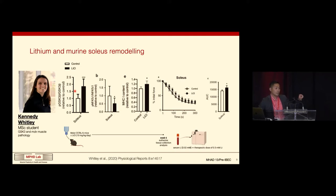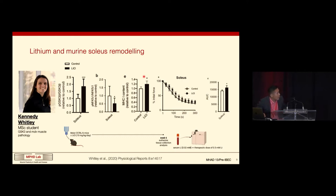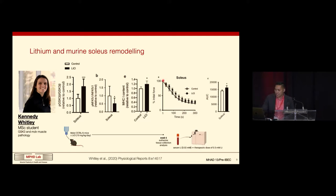GSK-3 phosphorylates NFAT, so when we inhibit GSK-3, we see a drop in NFAT phosphorylation, which activates NFAT. It then goes to the nucleus to increase transcription of genes associated with the oxidative phenotype, such as myosin heavy chain 1, and we see an increase in myosin heavy chain 1 protein. In the fatigue protocol — 70 Hz stimulation every two seconds for five minutes — the lithium chloride-treated soleus samples maintained a higher percent of initial force, leading to a significantly higher area under the curve.